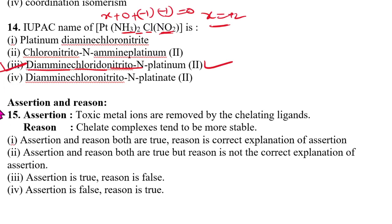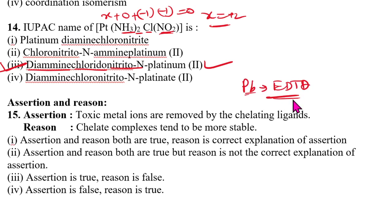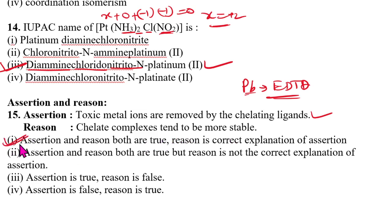Fifteenth question — assertion-reason type: toxic metal ions are removed by chelating agents. For example, in lead poisoning, EDTA can form a ring-like structure with lead ions — that is a chelating ligand action. This is correct. Chelate complexes tend to be more stable, so chelating agents can easily form chelate complexes with toxic metal ions. Reason is also a correct explanation for the assertion. Answer is option 1.